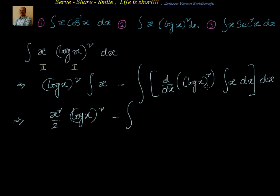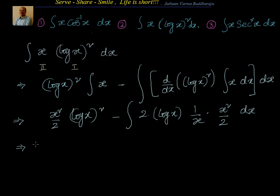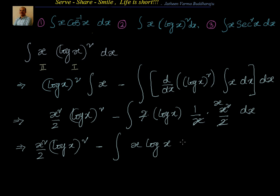What is d/dx of (log x)²? By the chain rule — similar to d/dx of u² = 2u · du/dx — we get 2·log x · (1/x). And the integral of x is x²/2. The 2s cancel and x simplifies, leaving minus ∫x·log x dx. So we now have x²/2 · (log x)² − ∫x·log x dx.